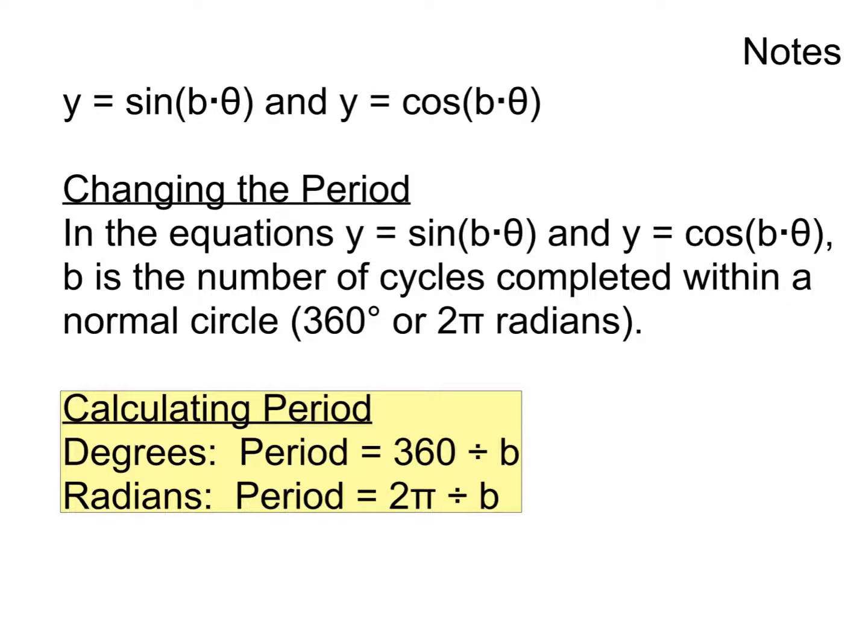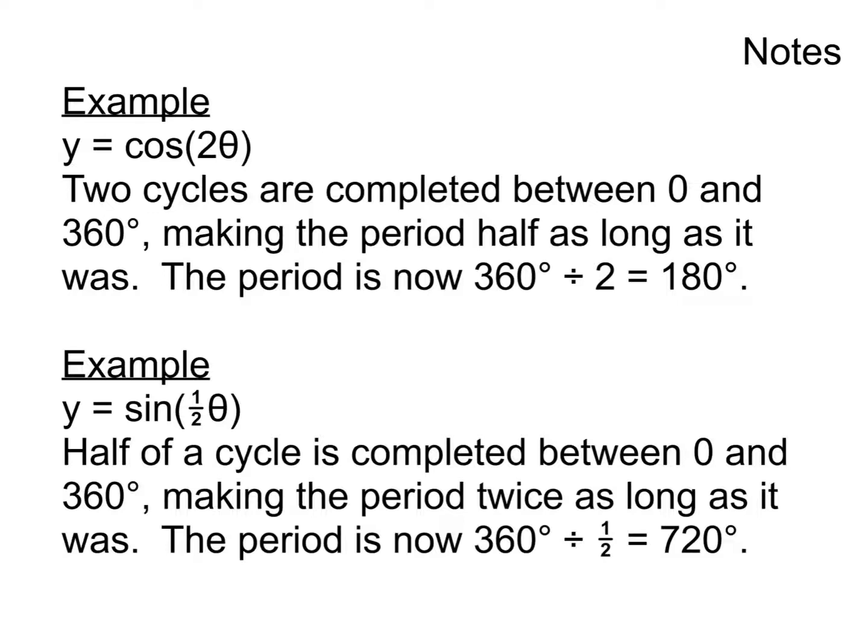So in order to change the period, it happens when we multiply the x or the theta by something. We multiply the variable by some number. So, b is the number of cycles completed within a normal cycle. And notice I put down here what a normal cycle is because it does depend on if we're working with degrees or radians. A normal cycle in degrees, we normally complete our full graph, the whole up and down process between 0 and 360. Or 2 pi because, of course, 2 pi is equivalent to 360 degrees when we're dealing with radians.